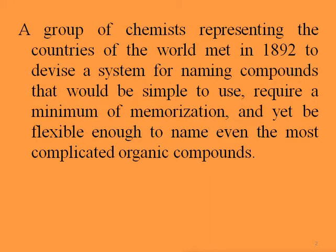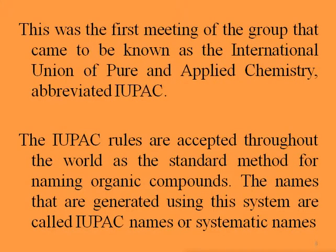A group of chemists representing countries of the world met in 1892 to devise a system for naming compounds that would be simple to use, require a minimum of memorization, and yet be flexible enough to name even the most complicated organic compounds. This was the first meeting of the group that came to be known as the International Union of Pure and Applied Chemistry, abbreviated as IUPAC. The IUPAC rules are accepted throughout the world as a standard method for naming organic compounds, and the names generated using this system are called IUPAC names or systematic names.